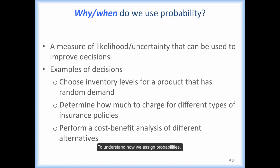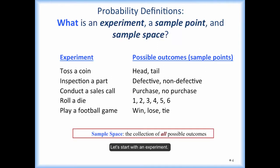To understand how we assign probabilities, it is essential to know the definitions of the terms that are related to probability. Let's start with an experiment. An experiment is a process that will generate one of a number of possible outcomes. Each outcome in an experiment is a sample point. The collection of all possible outcomes, or sample points, forms the sample space.